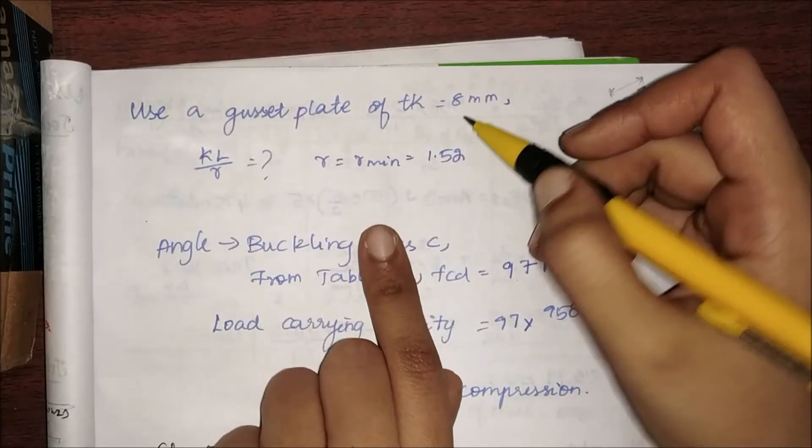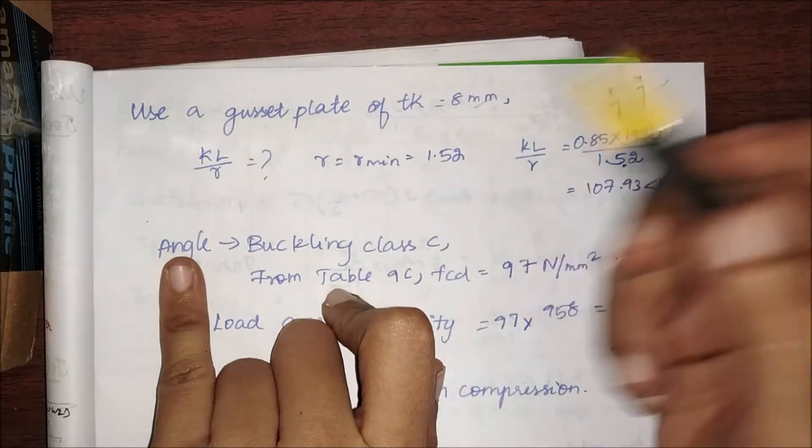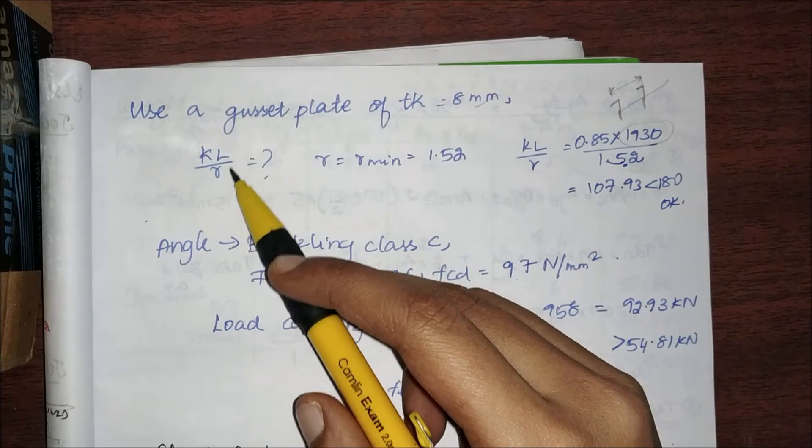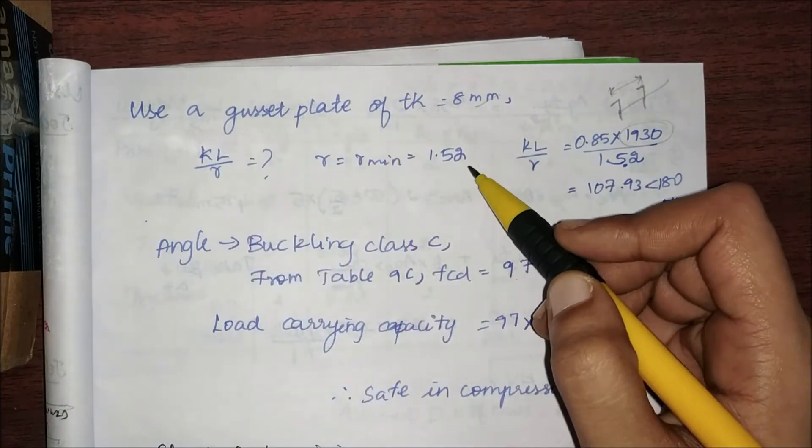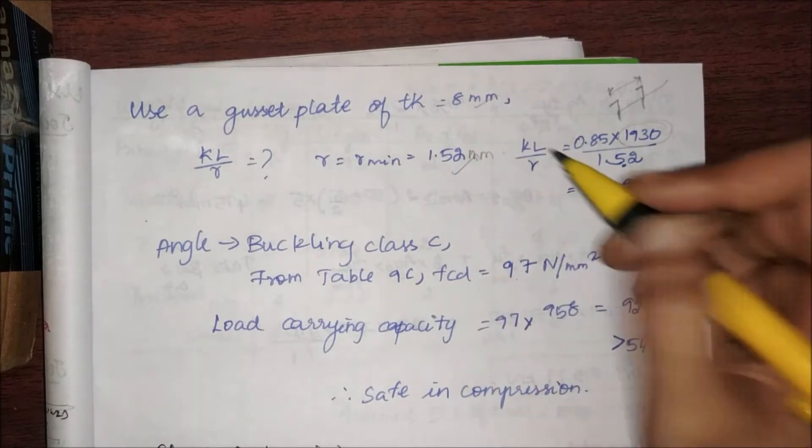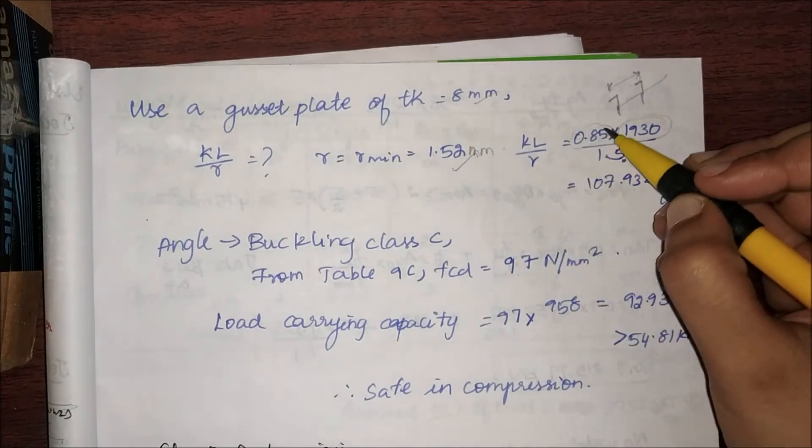Now I'm going to use a gusset plate thickness of 8 mm. Since it is a compression member, I have to find my slenderness ratio, kl/r minimum. From the section property I have found that r is 1.52 cm.